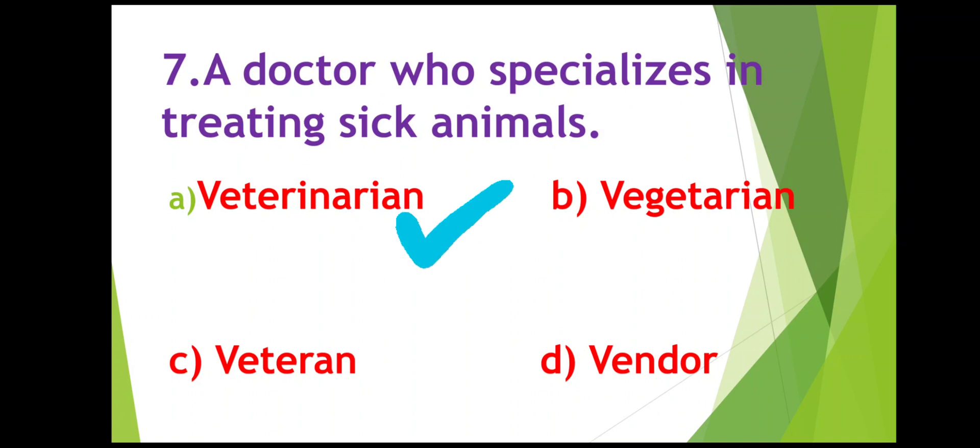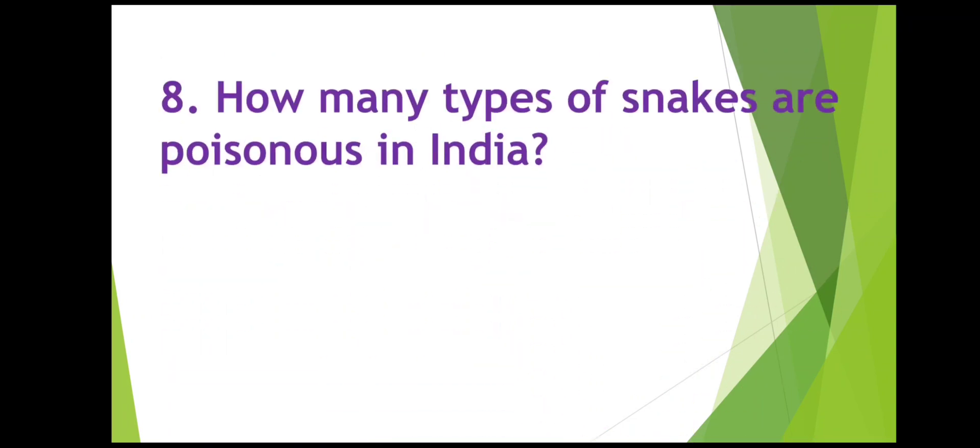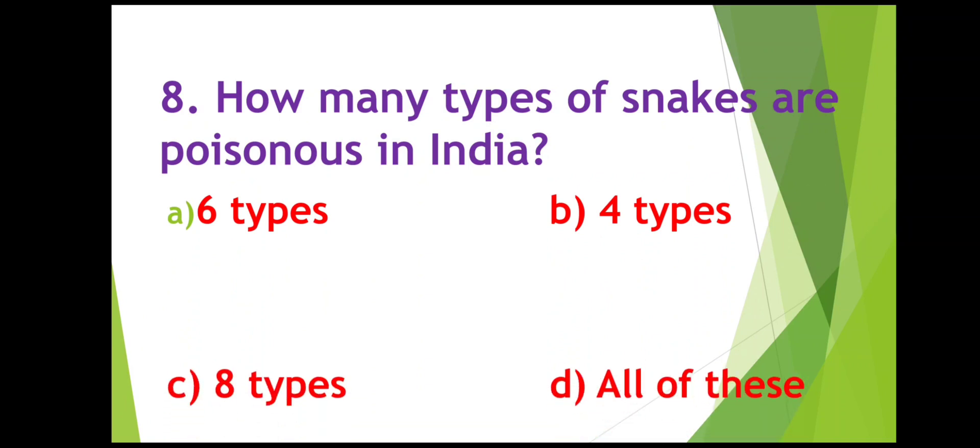How many types of snakes are poisonous in India? You must know that all the snakes are not poisonous. Only some types of snakes are poisonous that are found in India. So how many types? Six types, four types, eight types, or all of these. Right answer is four types. Only four types of snakes are poisonous in India.